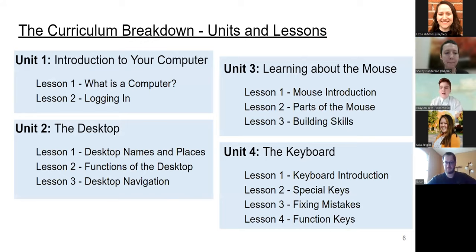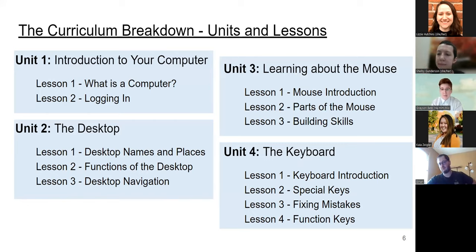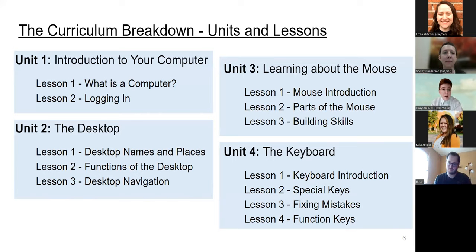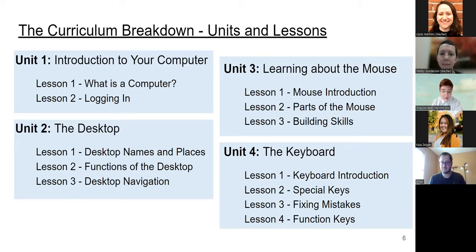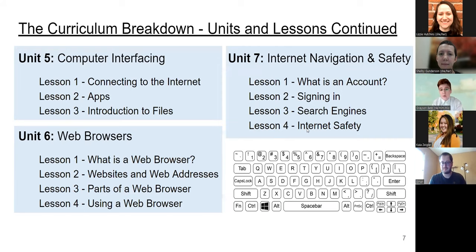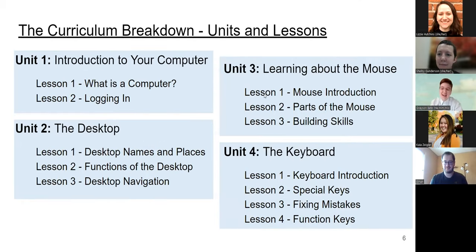Speaking of topics, let's go into the curriculum breakdown. We broke it down into seven distinct units, each with its own main broad topic. Each unit has approximately two to four lessons — it really varies. All units and each lesson have lesson plans, instructional materials, activities, as well as assessments. Each of these units was created with the purpose of using them independently, separately from each other. Unit one is our intro to your computer: vocabulary, logging in. Unit two is our desktop navigation, vocabulary. Unit three is all about our mouse. Unit four is the keyboard.